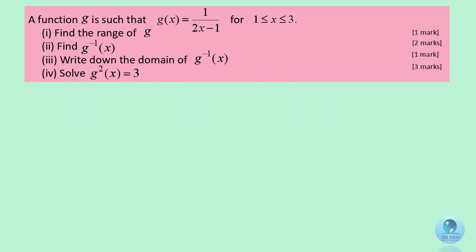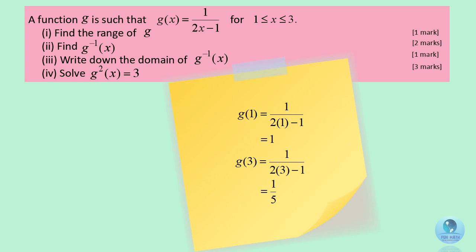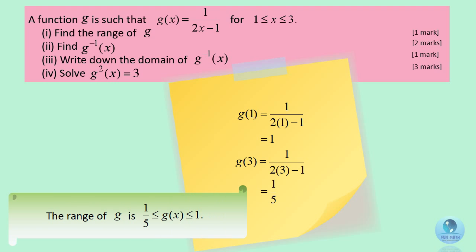The function g is a reciprocal function. To find the range of g, we substitute the minimum and maximum values from the given domain into g(x). Hence, the range of g(x) is greater or equal to 1 over 5 but lesser or equal to 1.